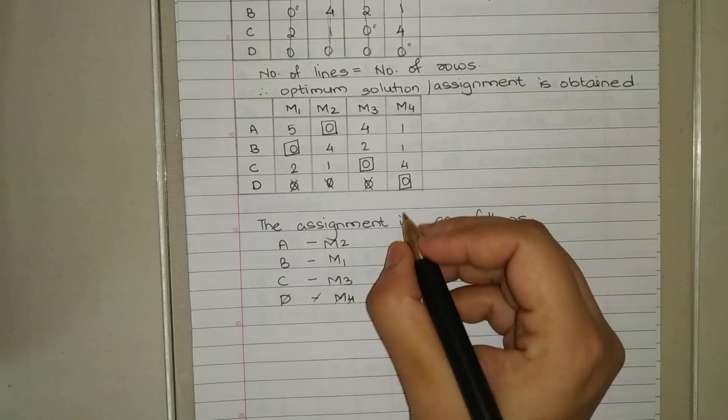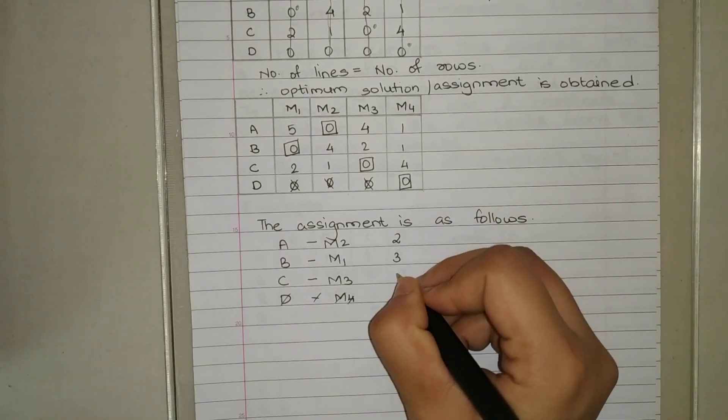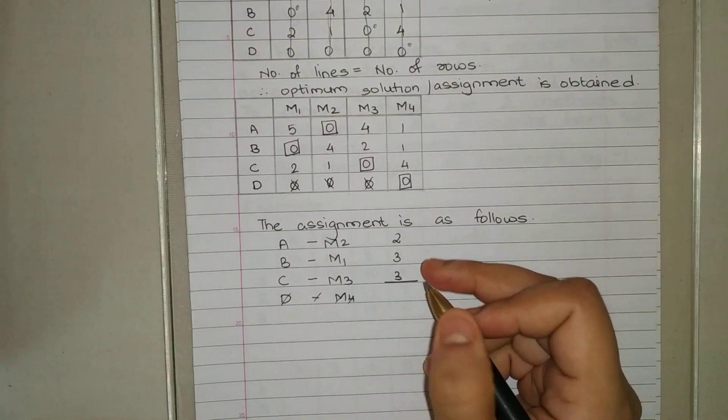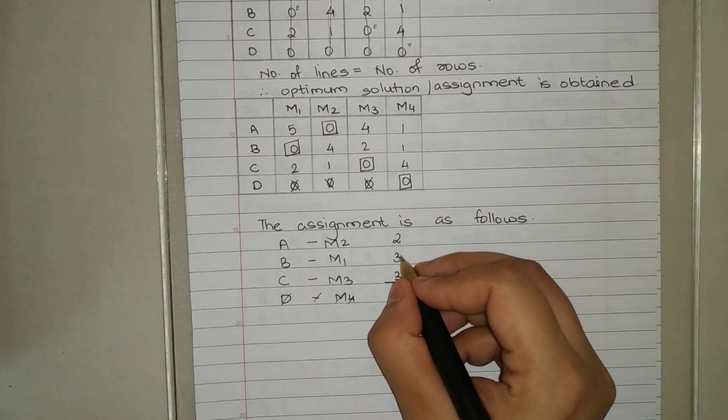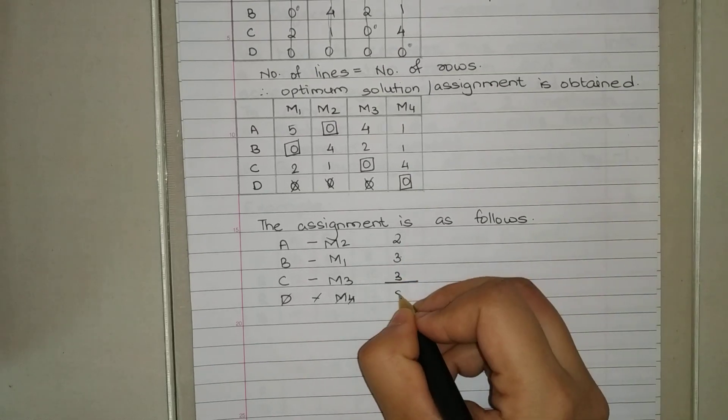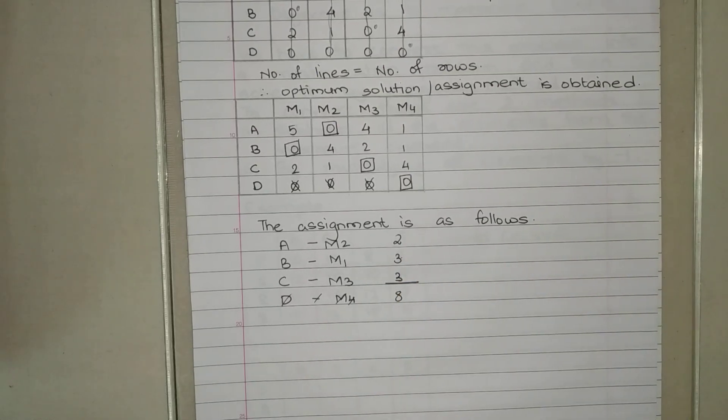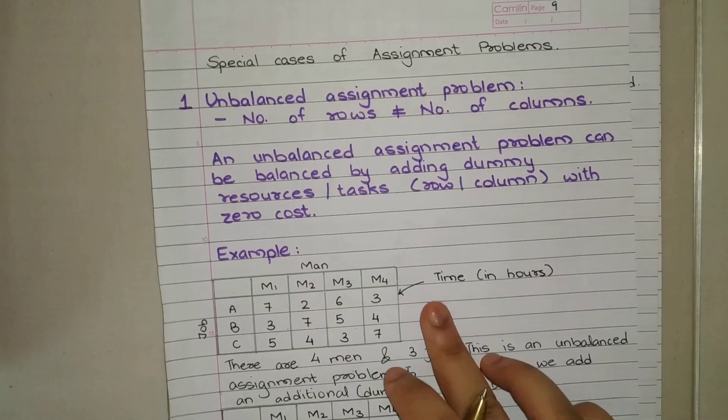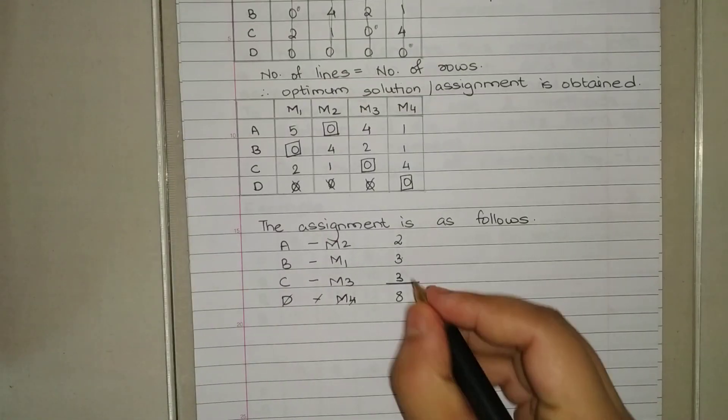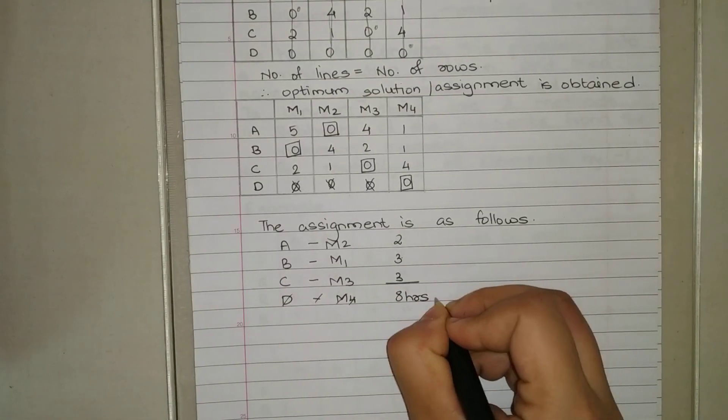If we add these costs, we get six plus six plus two equals eight. And this was the time in hours, so eight hours.